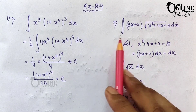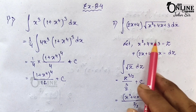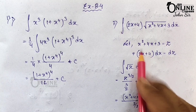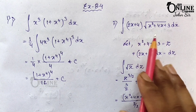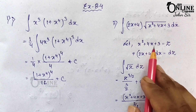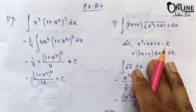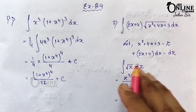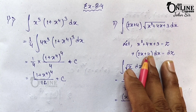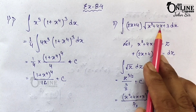For the second problem, I will solve step by step — the same way I proved the formula. I feel this step-by-step method is easier and reduces chances of error. So always try to use this method in exams. The problem is: ∫(2x + 4) · √(x² + 4x + 3) dx.